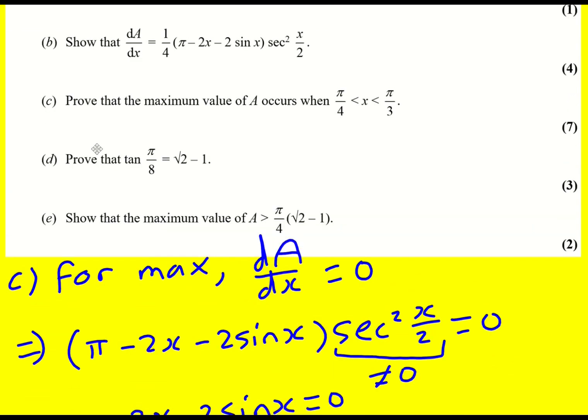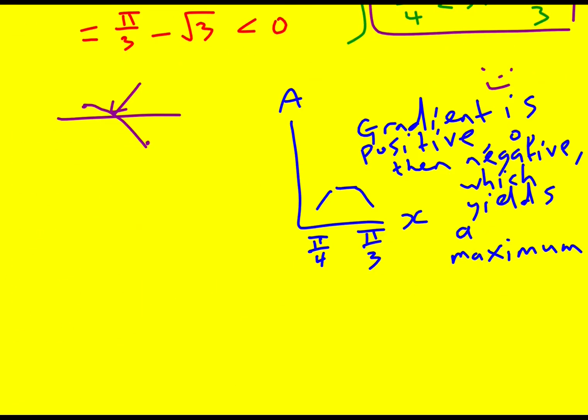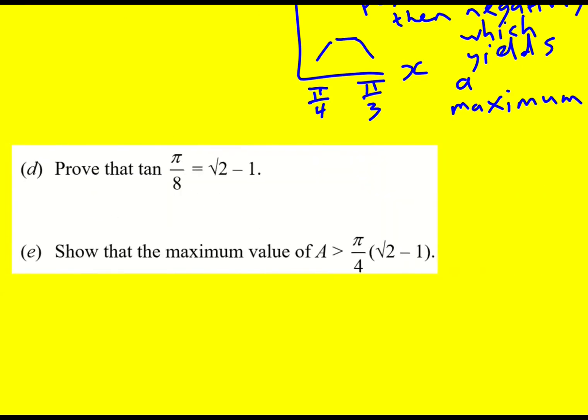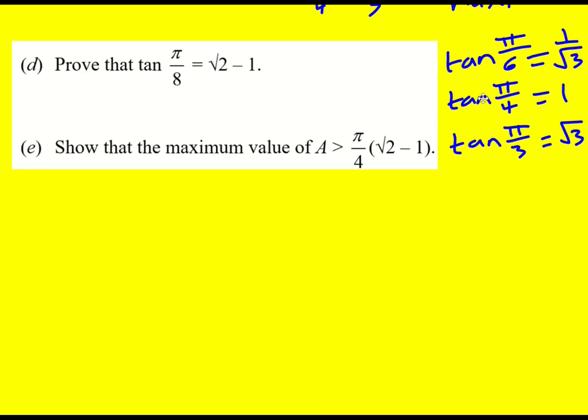Well, two more parts to this question. So first of all, we need to prove that tan π over 8 is root 2 minus 1, and then show the maximum value a is bigger than π over 4 times that tan π over 8. Well, it's worth when dealing with this sort of question, writing down things that you know. So tan π over 6 is 1 over root 3. Tan π over 4 is 1. And then tan π over 3, same as tan 60 degrees, is then root 3. Tan π over 2, of course, doesn't exist because it goes off to infinity. Now, the thing that jumps out here is this tan π over 4. Can we relate the π over 8 and the π over 4? And we can if we use double angle formulae.